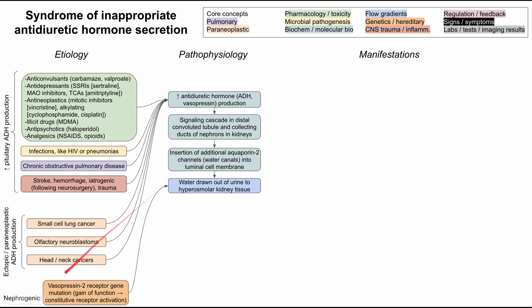This brings up another nephrogenic cause of SIADH. You can have a gain-of-function mutation in the vasopressin-2 receptor gene where the channel is constantly activated. This skips the high ADH part of the pathway but can still cause all the downstream symptoms we'll see.